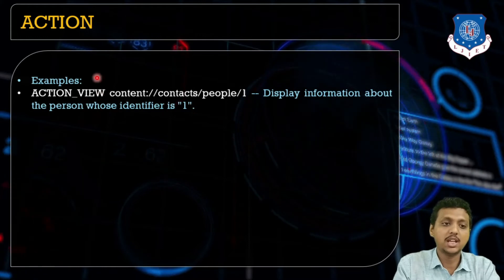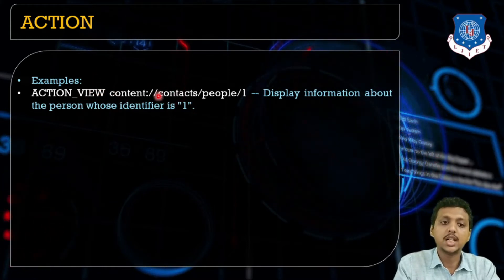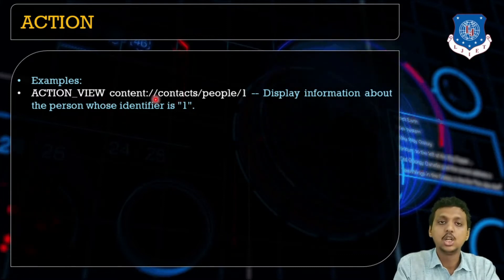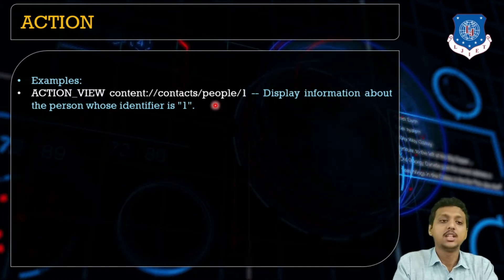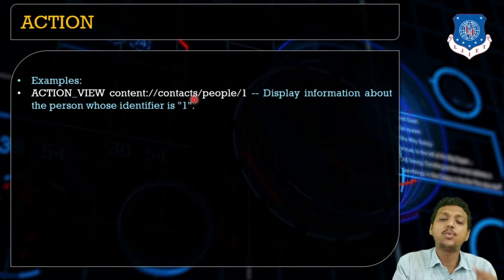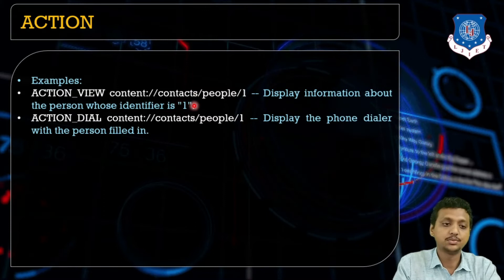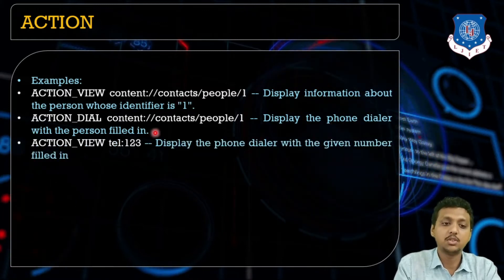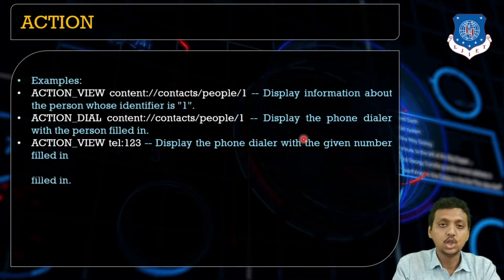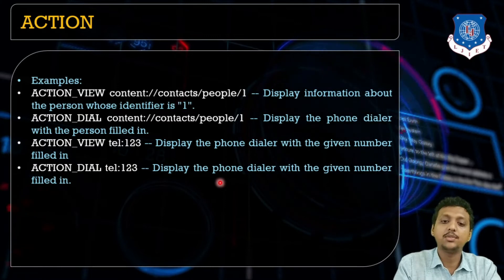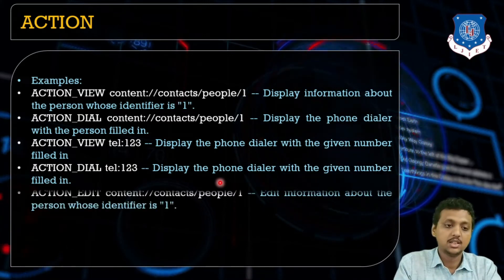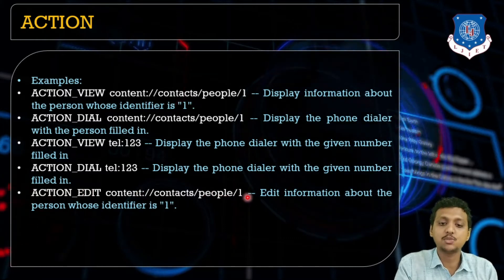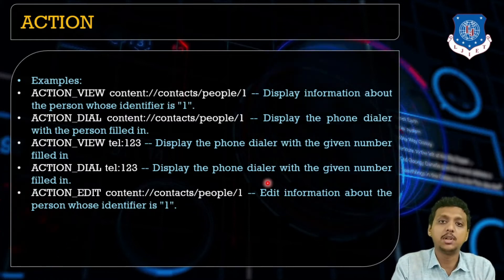Examples of actions: ACTION_VIEW with content://people/1 displays information about the person whose identifier is 1. For dial, using tel:123 displays the phone dialer with the given number filled in. For edit, ACTION_EDIT with content://people/1 allows editing that contact. Such actions can be performed using intent.